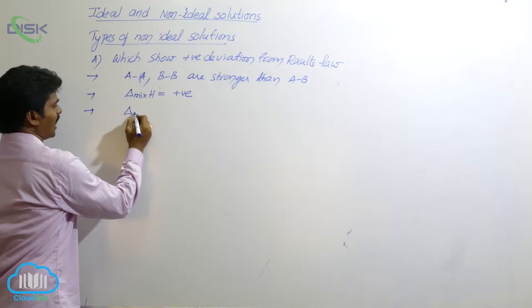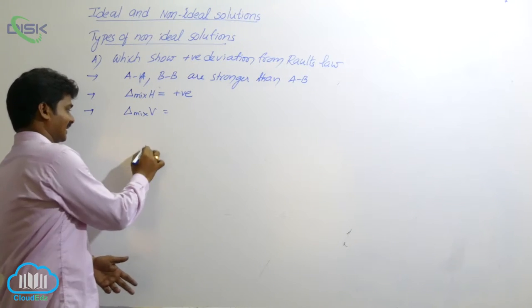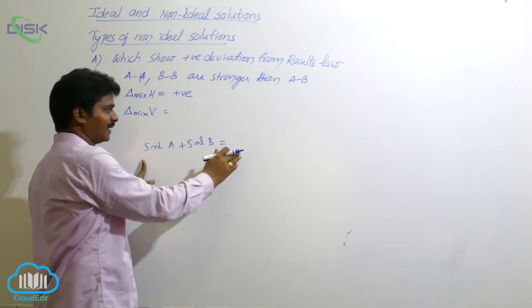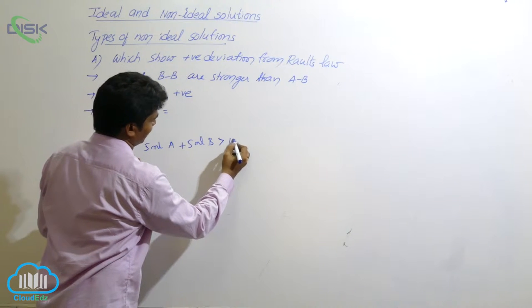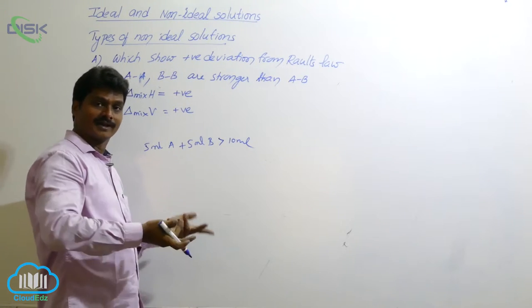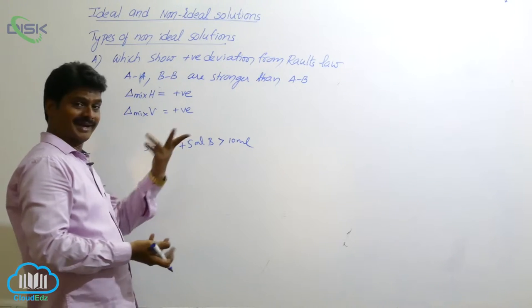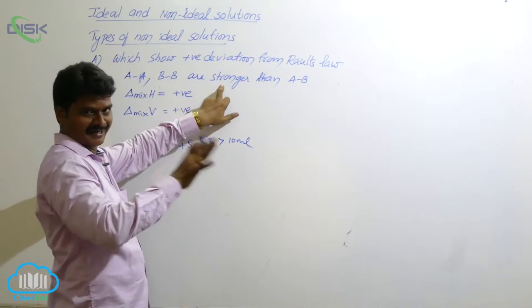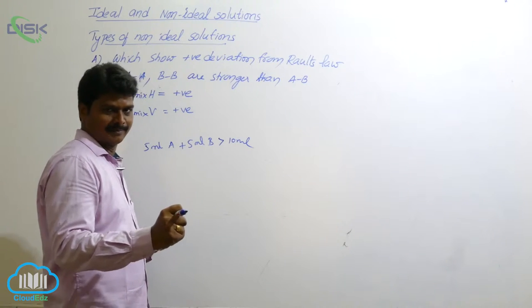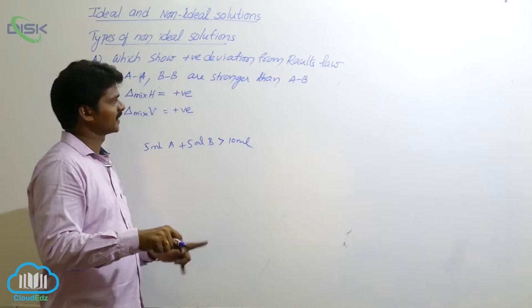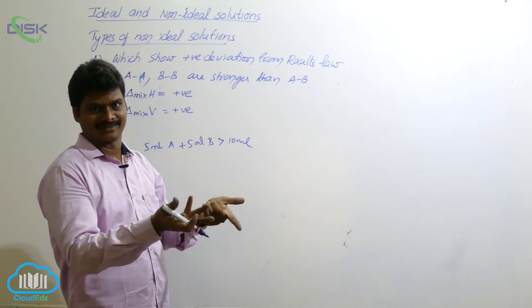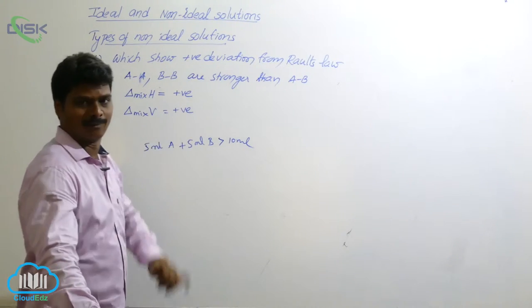What about the volume of mixing? When you mix 5 ml of A and 5 ml of B, in an ideal situation there should be 10 ml, but here more than 10 ml is observed — so volume of mixing is positive. This is because in pure liquids, molecules are strongly held together, but when both are mixed, A and B molecules are weakly held due to weak interactions, so volume increases.